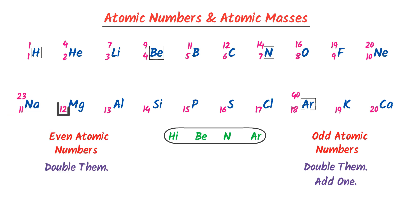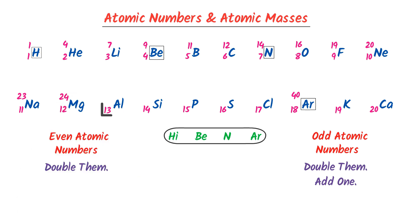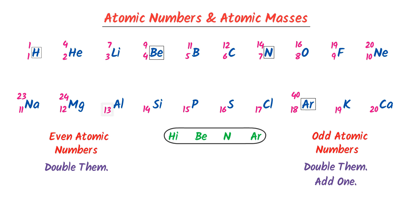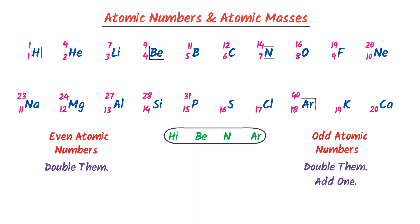The atomic number of Magnesium is 12; double it, which gives 24. The atomic number of Aluminium is 13; double it to get 26, plus 1 equals 27. The atomic number of Silicon is 14; double it, which gives 28. The atomic number of Phosphorus is 15; double it to get 30, plus 1 equals 31.